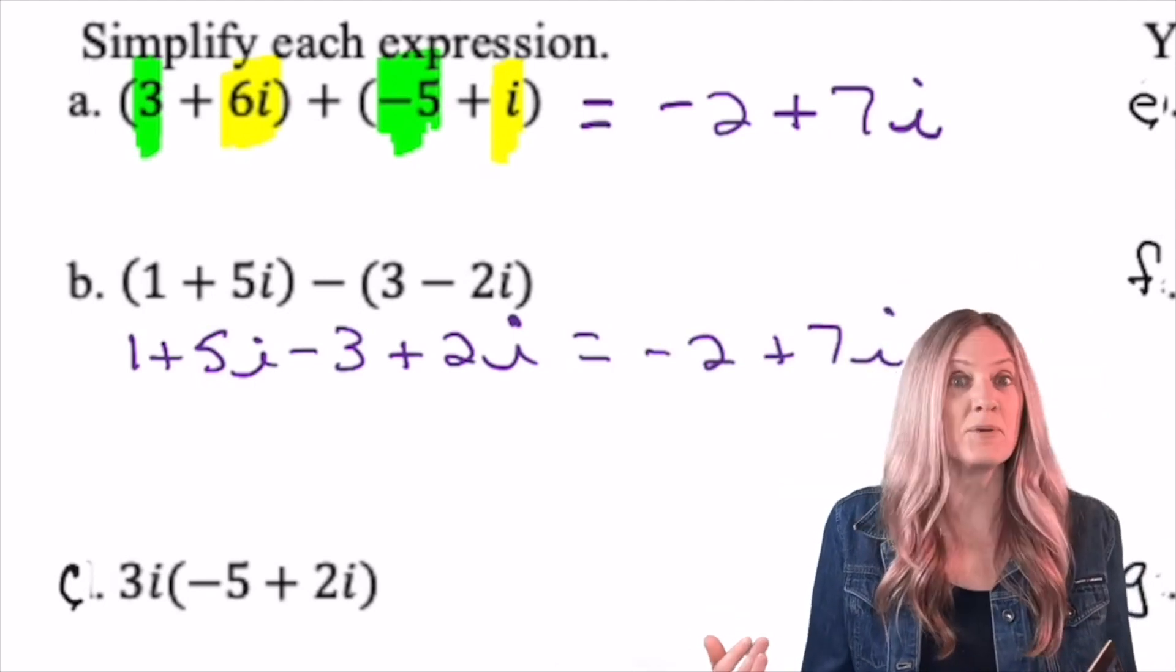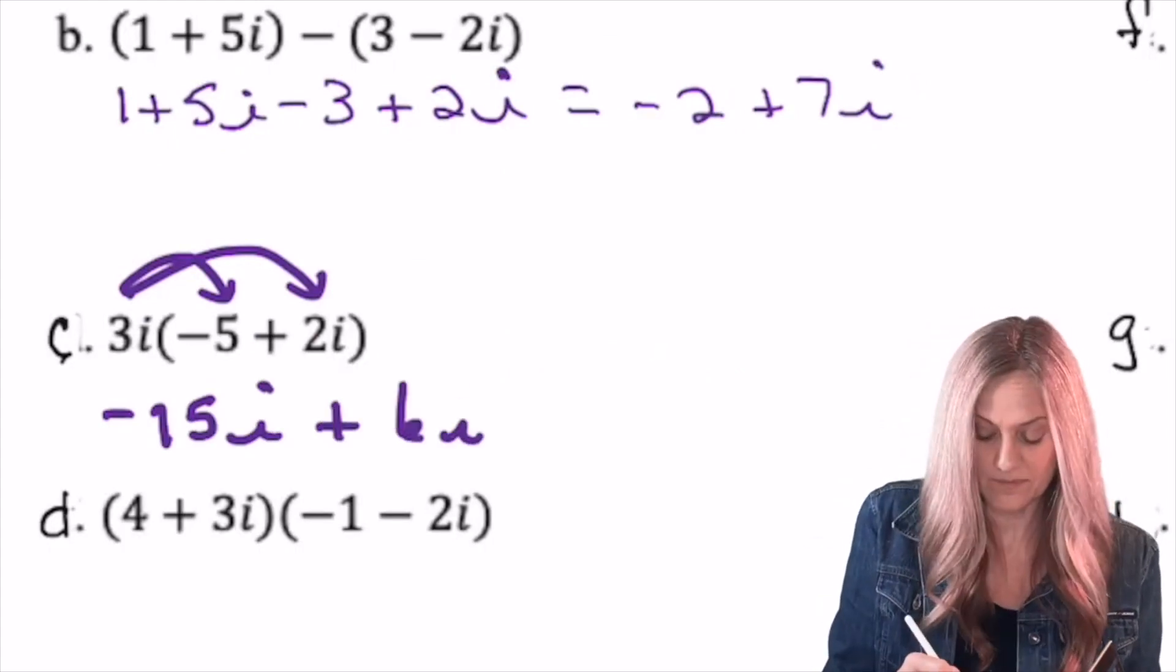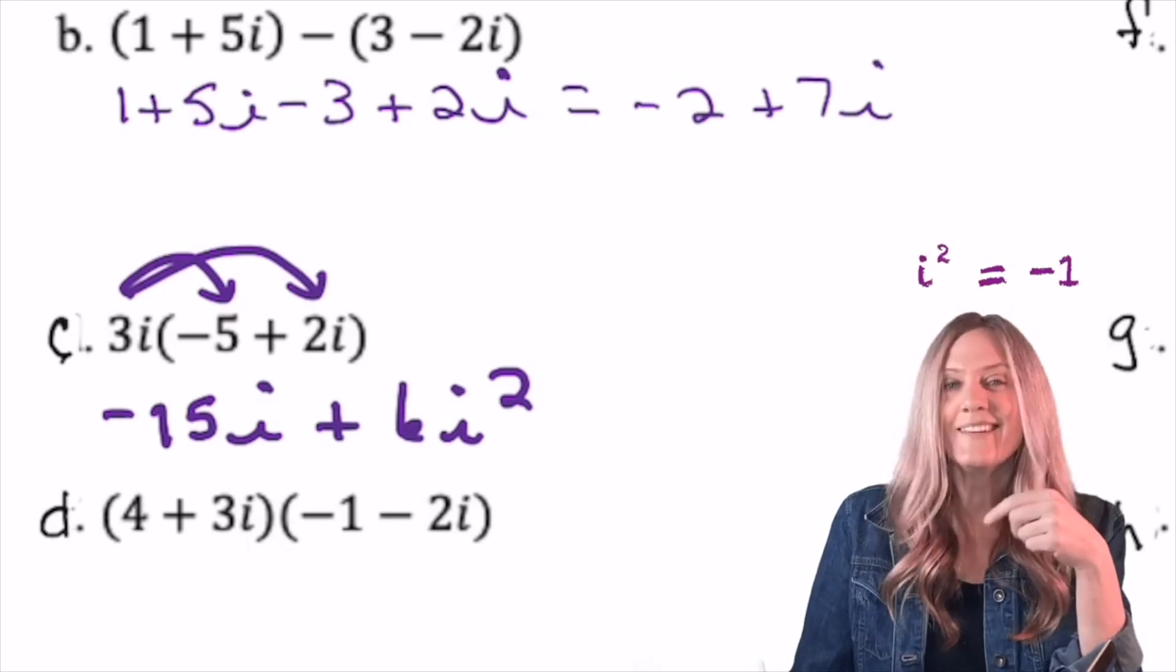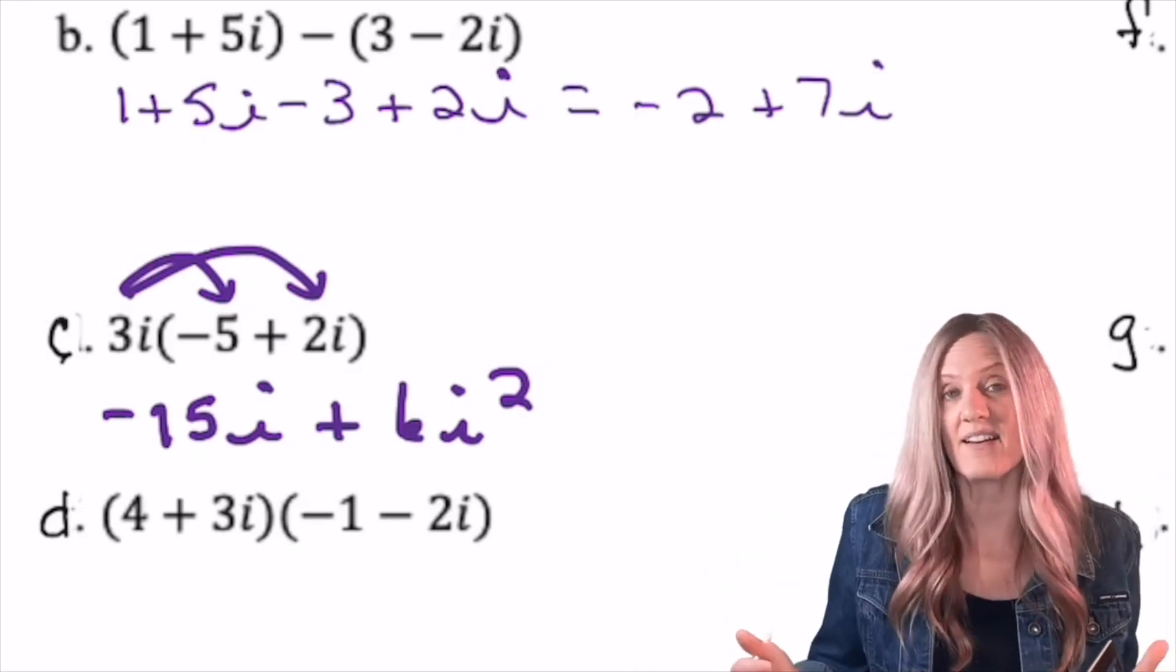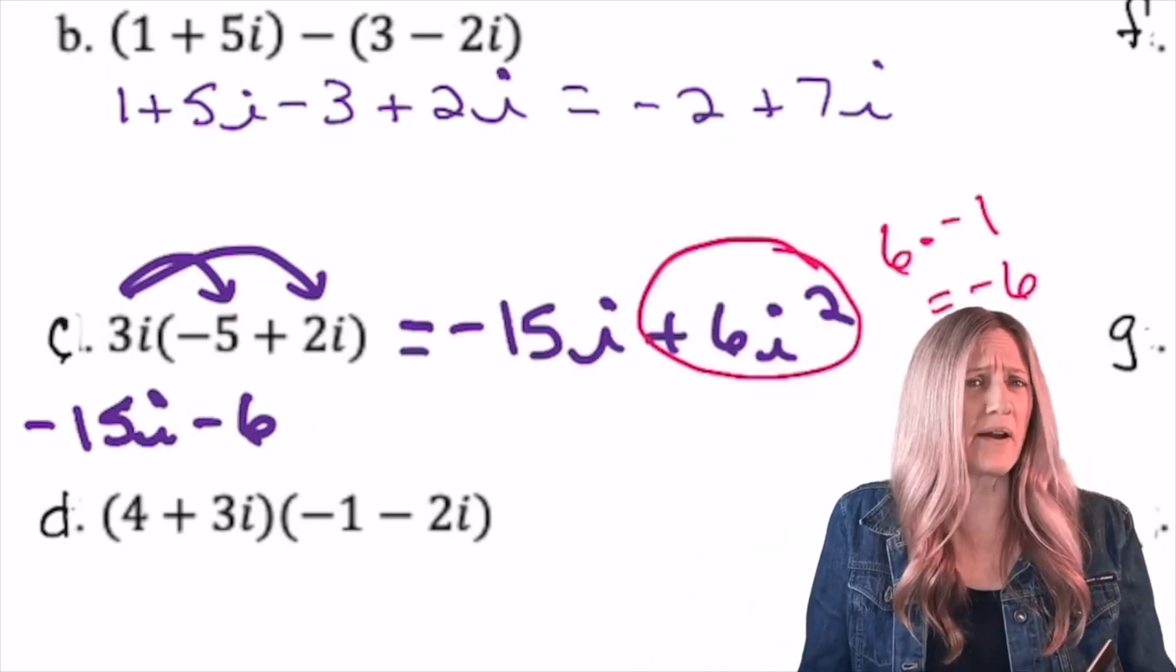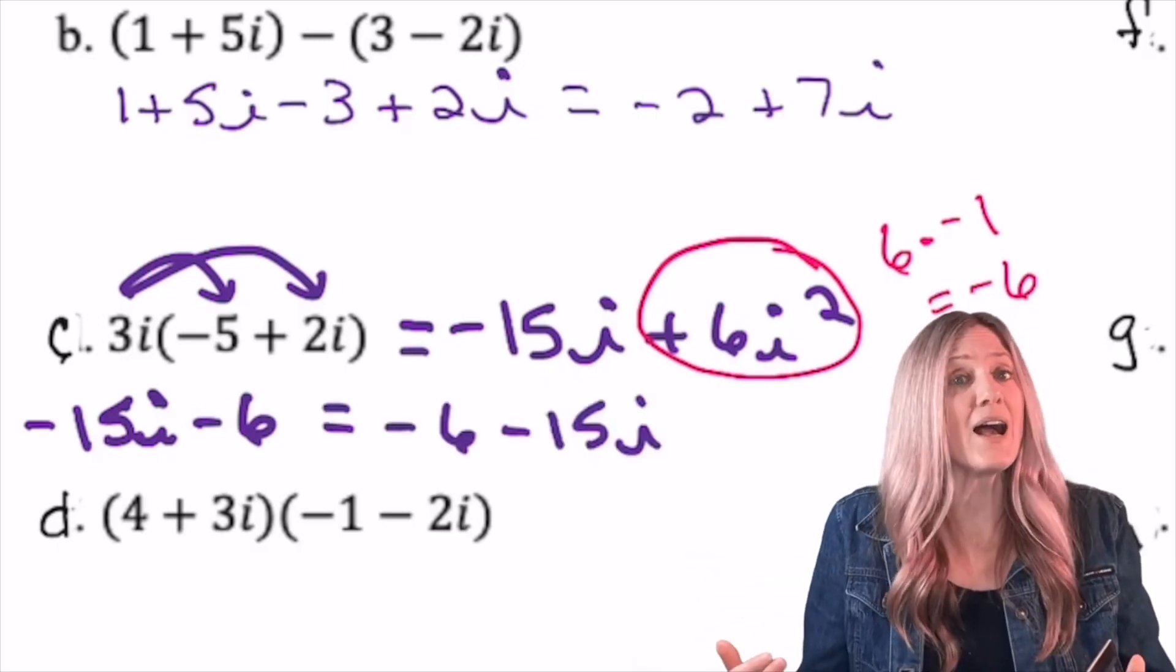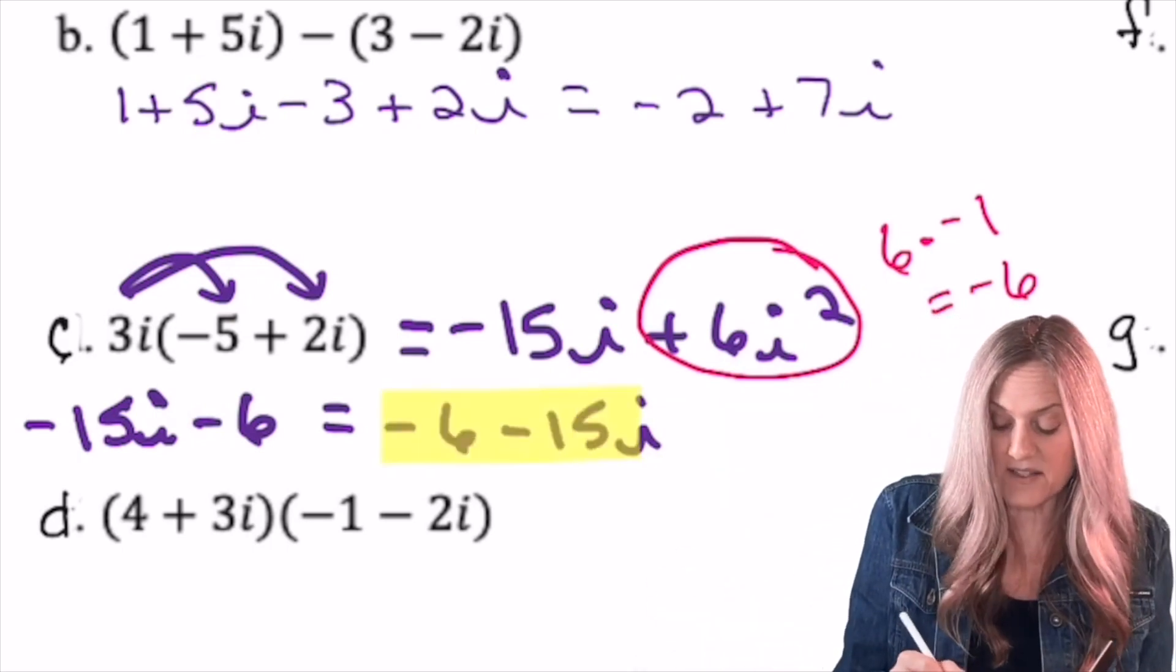Example c. All we're doing is multiplying by a monomial. No worries. Let's distribute 3i. Whoa! This looks a little, not sure. Wait a second. Remember back when things got real? Yes! i² is negative 1. So 6i² is not 6i². It's 6 times negative 1. That's negative 6. Never okay to leave something as i². That's like not simplifying it. So once I have 6i² is a minus 6, I have -15i - 6. That's not correct format. a + bi. Real number plus or minus the imaginary number. So final proper answer is -6 - 15i.